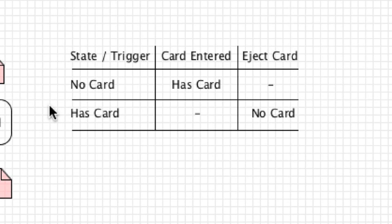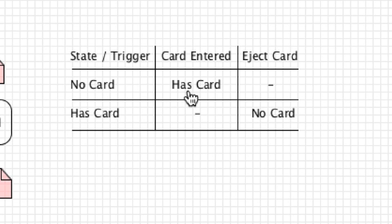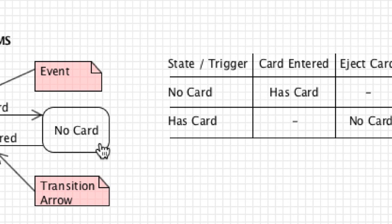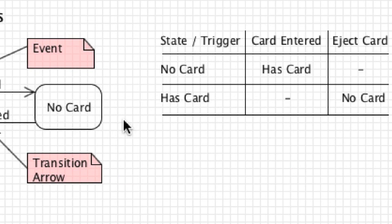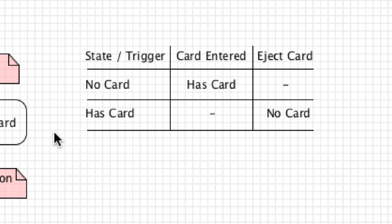States and transitions are often listed in a table format, where you list state and trigger and across the top you list your events, showing how individual events change individual states. So, 'no card' — if a card is entered, it changes to the new state 'has card.' If you prefer to list them in table form you can do that, however it is not quite so common.